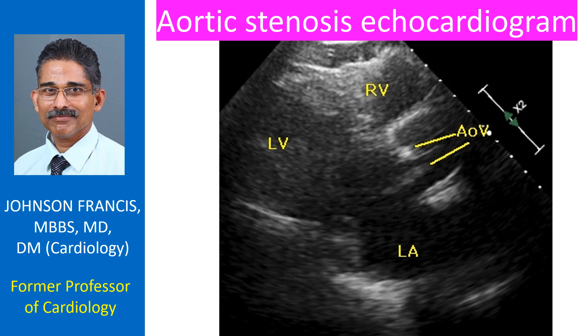This is the parasternal long axis view, which shows the outflow region of the right ventricle, interventricular septum, left ventricle, left atrium, and the aorta.